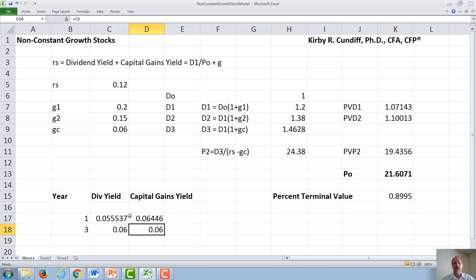Rs of 12% minus 6% leaves us 6%. So over the life of the stock, the capital gains yield starts out at 6.5%, decreases to 6%. The dividend yield increases from 5.5% to 6%. This would be consistent with a high growth rate company, where it starts out initially investing more money into the growth of the company, and then over time, as it becomes more stable, it can afford to pay more money out in dividends. I thank you for watching this video.